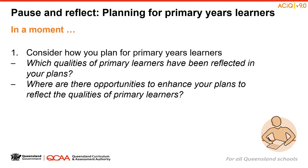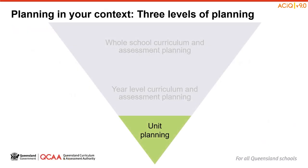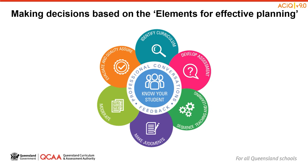The opportunity presented by a curriculum refresh also provides a wonderful opportunity to reflect on how we are enacting the curriculum to meet the needs of our learners — in this case, students in the primary years. Which qualities of primary learners have been reflected in your plans? Where are there opportunities to enhance your plans? Pause the session recording at this point and take some time to record some ideas about how you can plan for primary learners in your context. After having considered both whole school and year-level planning, you can begin to develop specific units aligned to the Australian Curriculum Version 9. The Elements for Effective Planning advice, available on the QCAA website, outlines six interdependent elements, with the primary years learner in your context central to effective planning.